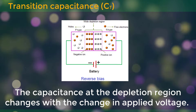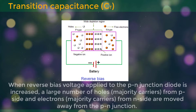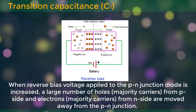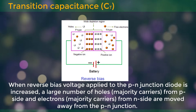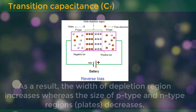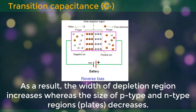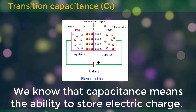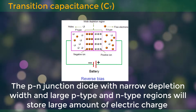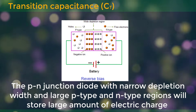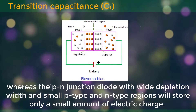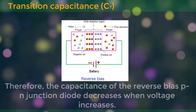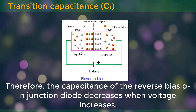The capacitance at the depletion region changes with the change in applied voltage. When the reverse bias voltage applied to the PN junction diode is increased, a large number of holes — the majority carriers — from the P side, and electrons — the minority carriers — from the N side, are moved away from the PN junction. As a result, the width of the depletion region increases whereas the size of the P-type and N-type region plates decreases. The PN junction diode with narrow depletion width and large P-type and N-type regions will store a large amount of electric charge, whereas the PN junction diode with wide depletion width and small P-type and N-type regions will store only a small amount of electric charge. Therefore, the capacitance of the reverse biased PN junction diode decreases when voltage increases.